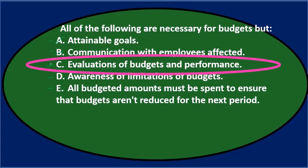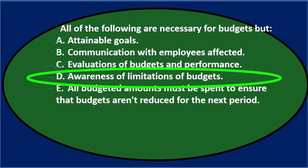C says evaluations with budgets and performance. You probably want to evaluate the budget against actual performance — that would be part of the budgeting process. D is awareness of limitations of budgets. Maybe not strictly necessary, you could argue, but it would be good to have an idea of that to put the budget in place.